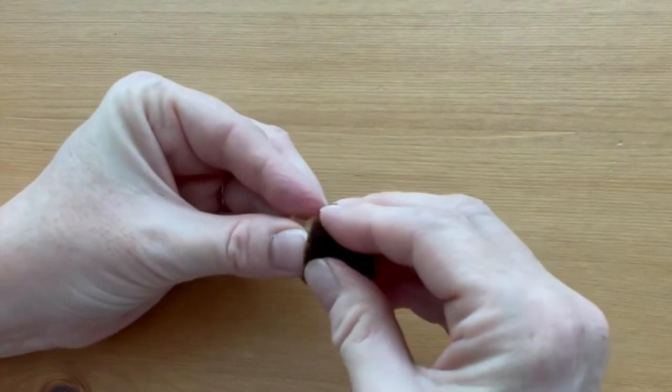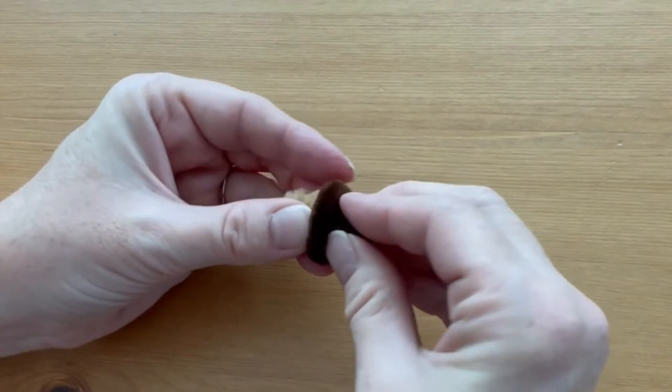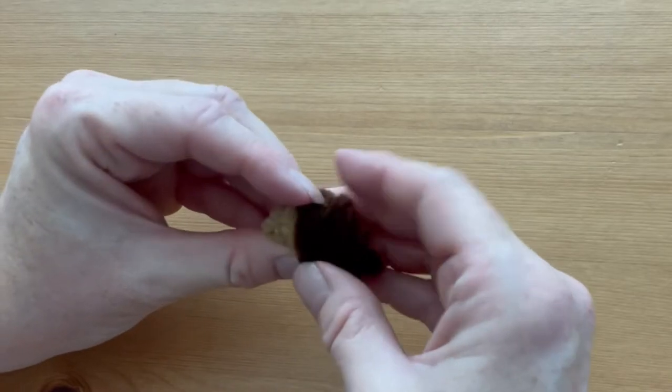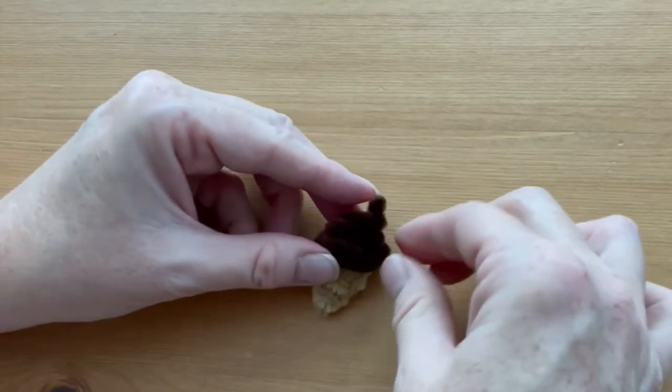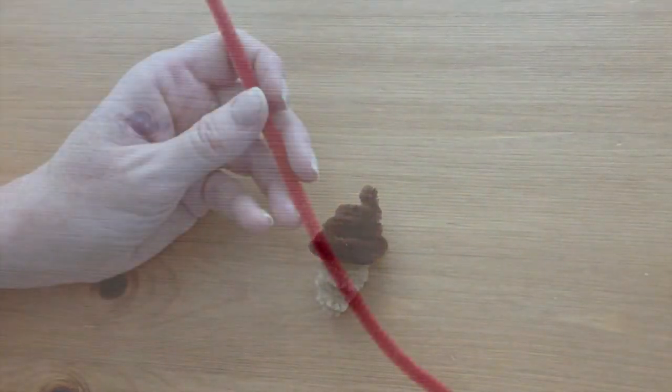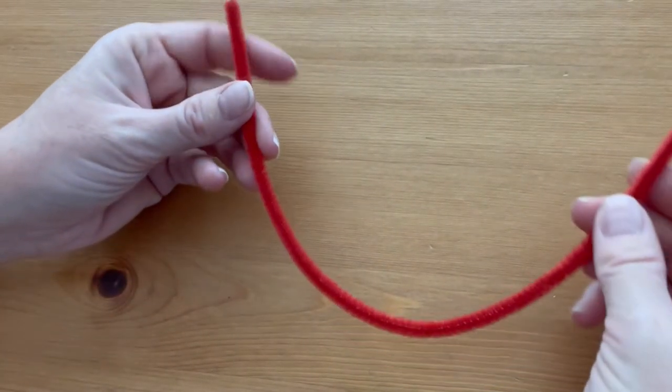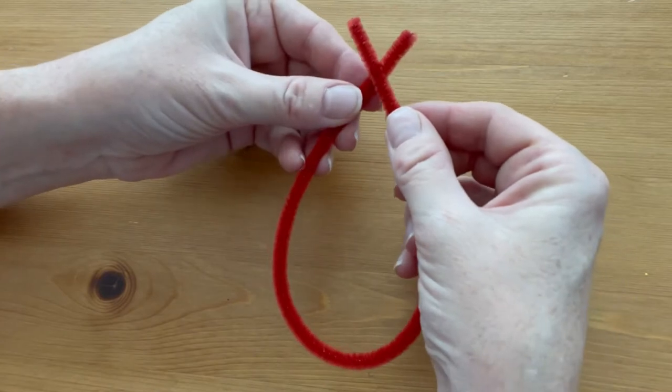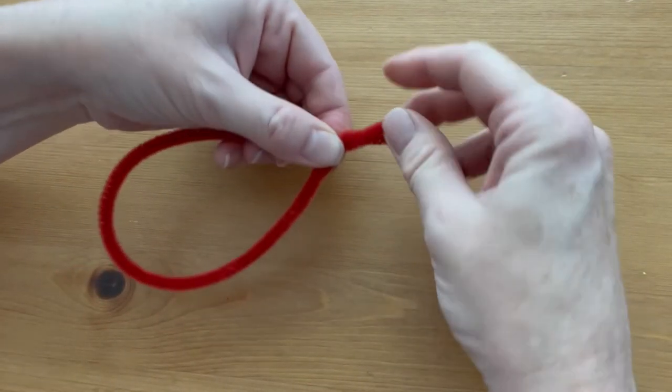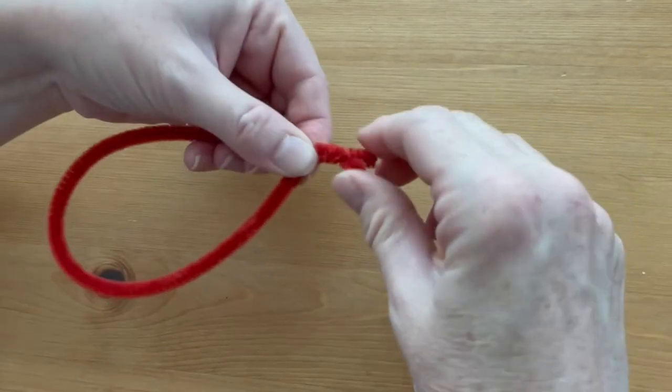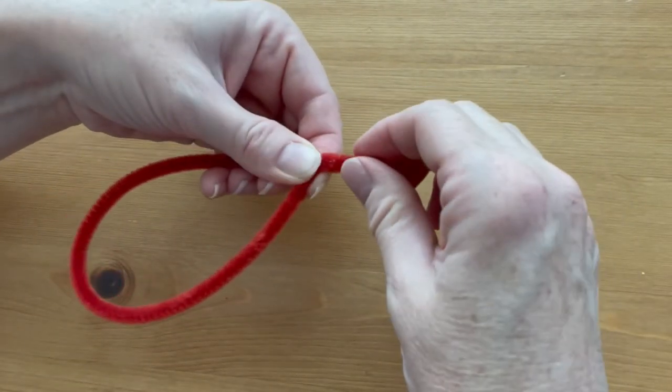Press everything together. To make the oak leaf, cross over the ends of the pipe cleaner about one inch, and then twist those together to make a stem and to hold the pipe cleaner in place.